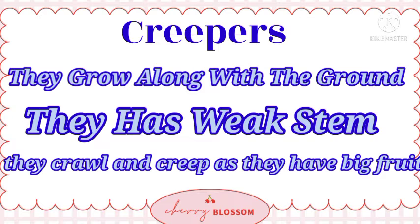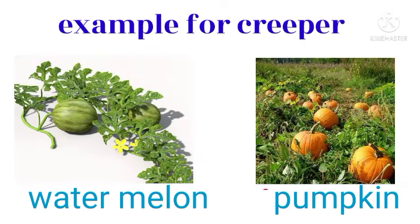Creepers: They grow along the ground. Creepers ground pe hi ugte hain. They have weak stems. Creeper ki stem weak hoti hai. They crawl and creep as they have big fruits. Examples for creepers include pumpkin.